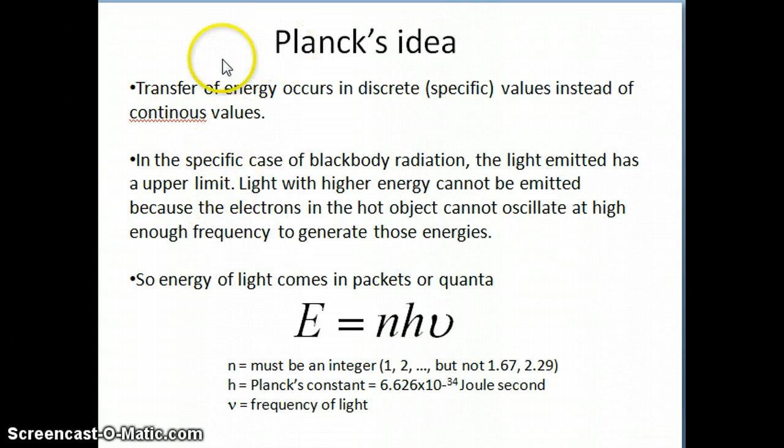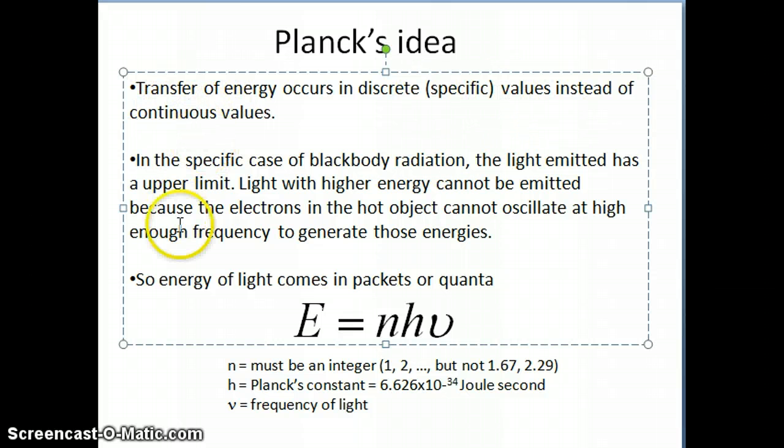So let's move on here and summarize Planck's idea. Planck basically said that transfer of energy occurs in discrete, this term discrete is commonly used as well, discrete or specific values or quantized values instead of continuous values. In the specific case of black-body radiation, the light that's emitted basically has an upper limit, because the electron that's oscillating, remember that the electron is in a hot object, is oscillating. The frequency of that oscillation is limited to specific values.